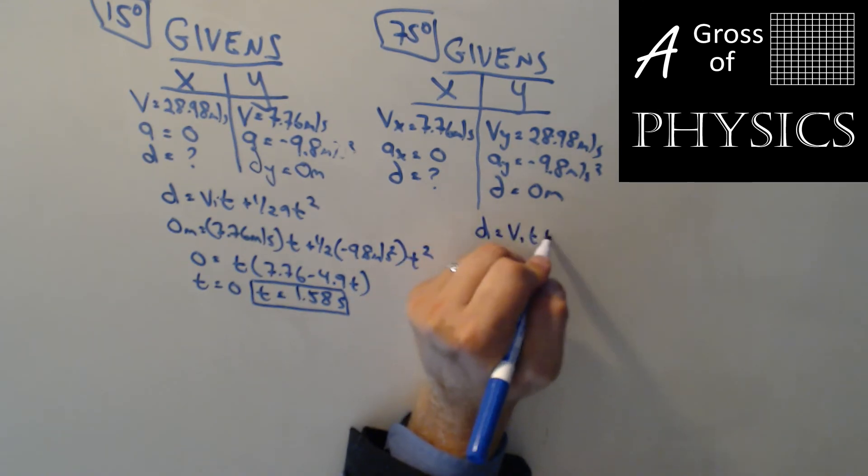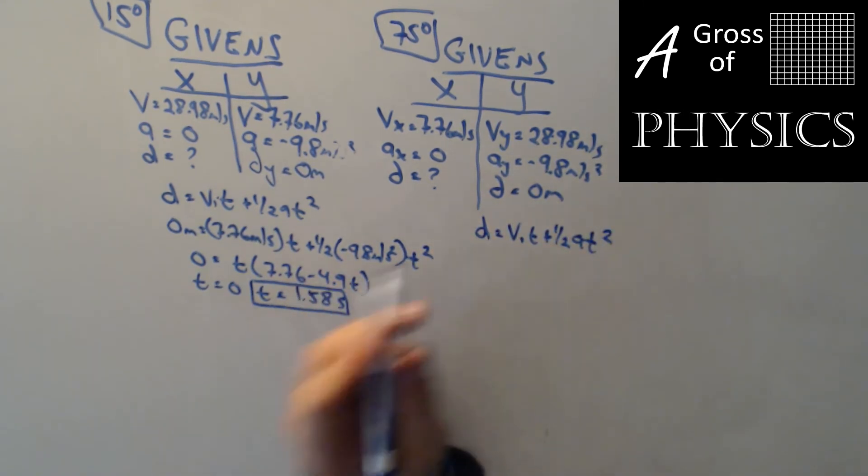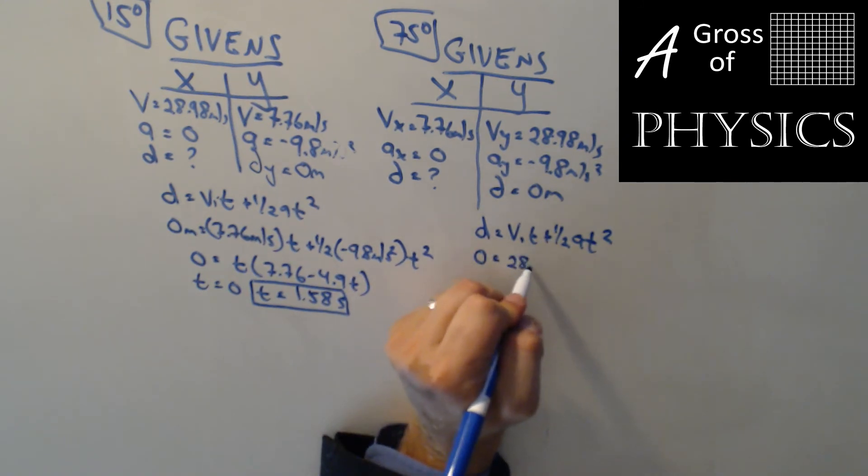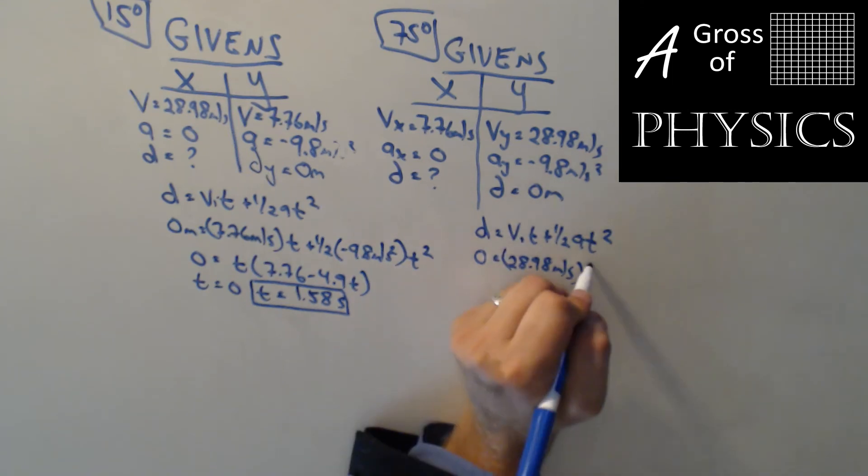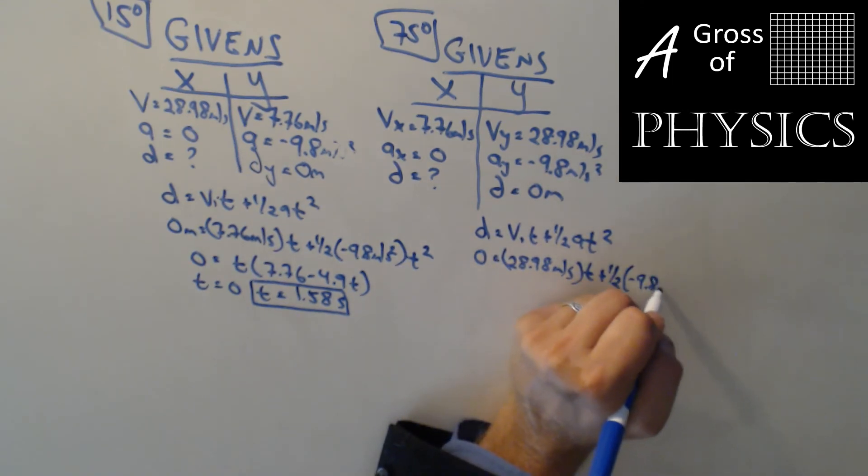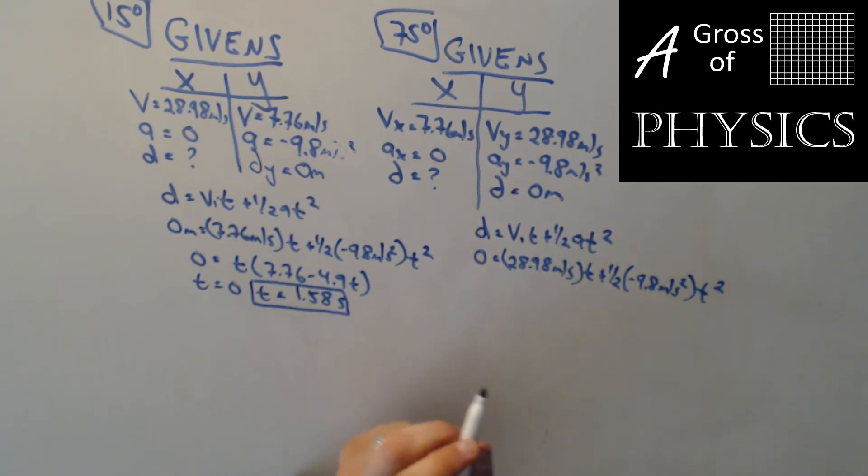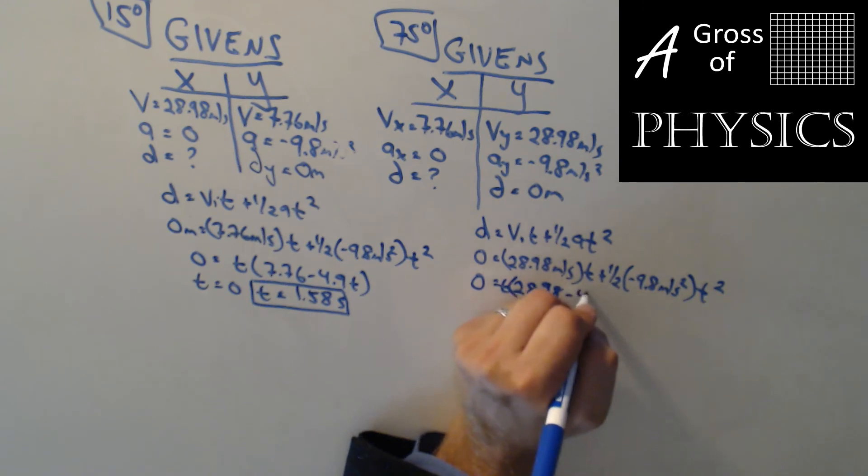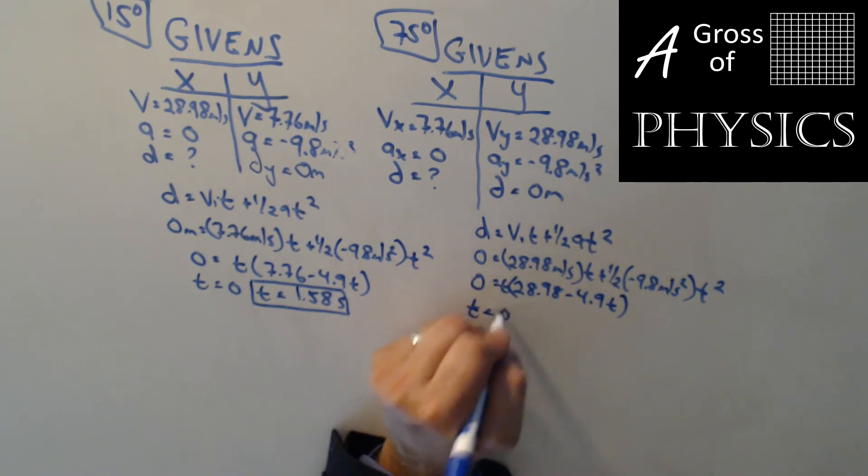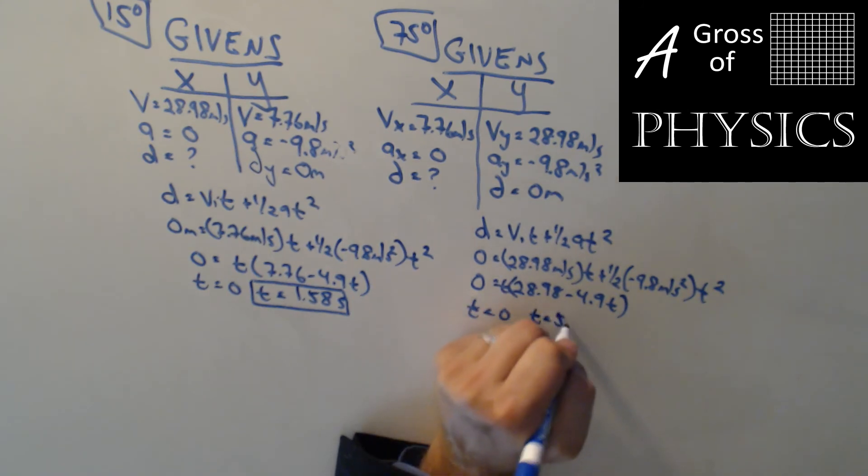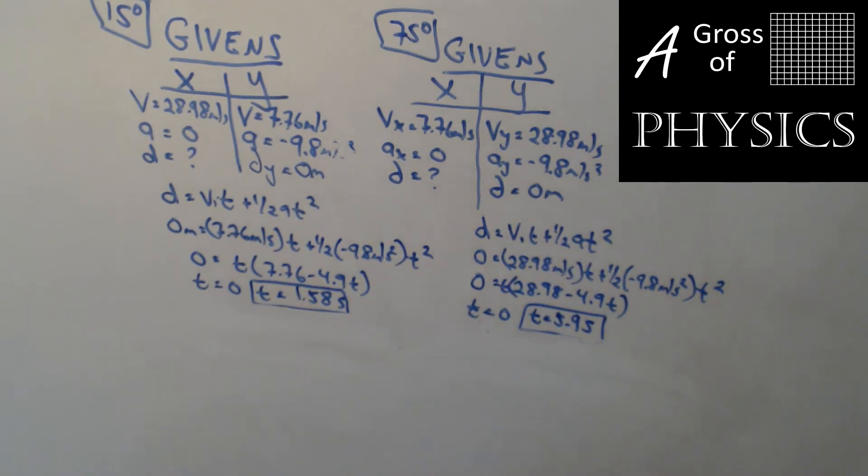We'll do the same for the 75. T equals V, I, T, plus one-half A, T squared. 0 equals 28.98 meters per second T, plus one-half negative 9.8 meters per second squared T squared. Once again, I'm going to factor out. So 0 equals T times 28.98 minus 4.9 T. T equals 0, and T equals, let's see what, 28.98 divided by 4.9 gets me 5.9 seconds. A significant amount of time.